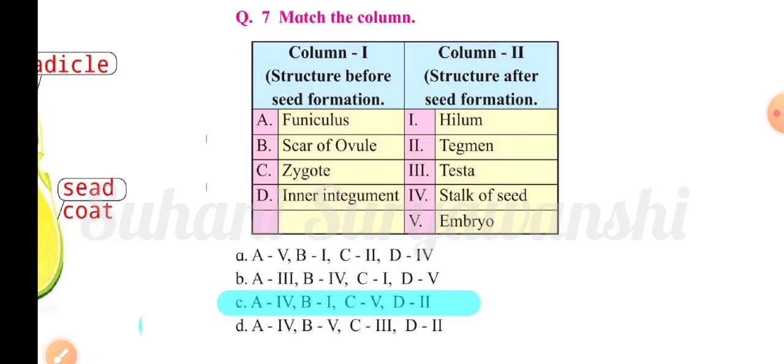Question seven: match the column. Column A represents structures before seed formation; column B represents structures after seed formation. Funicle develops as the stalk of the seed, scar of ovule develops as the hilum, zygote develops as the embryo, and inner integument develops as the tegmen. Thank you so much for watching this video. Please share this video.